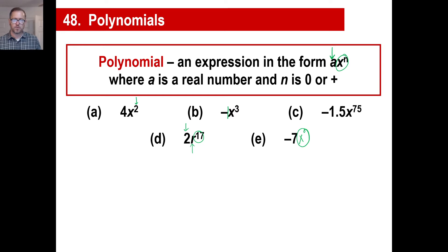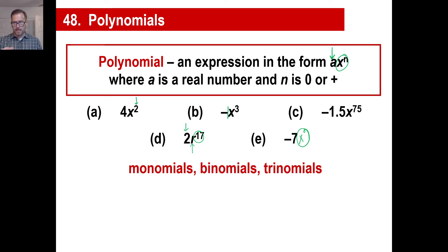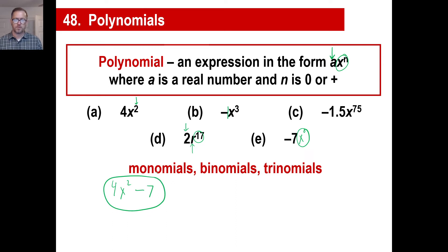There are different types of polynomials. All of those examples — A, B, C, D, and E — they're all monomials. Binomials look like this: 4x squared minus 7. That's a binomial because there are two terms. A trinomial, obviously, would be something like 3a plus 7 minus 82y to the 20th power. That's a trinomial — three terms.